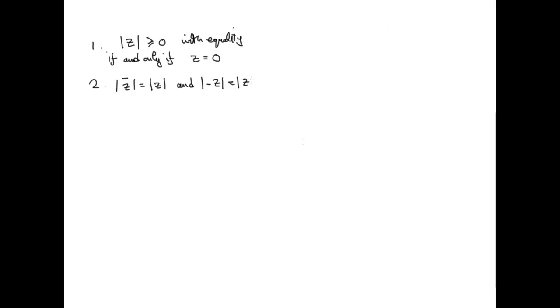Moving on to the second property: the modulus of the conjugate of a complex number is identical to the modulus of the number itself. Also, the modulus of the negative of a complex number is identical to the modulus of the complex number. These two properties were proved in video 7, which introduced the modulus, so they have already been proved — look back at that video if you're unsure.